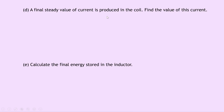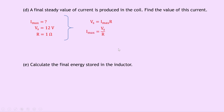Part D says that a final steady value of current is produced in the coil — find the value of this current. It's going to be the maximum current, Imax. Supply voltage Vs is 12 volts and resistance R is 1 ohm. Using Ohm's law, Vs equals Imax times R, so Imax equals Vs over R. Substituting in gives 12 divided by 1, which gives a maximum current of 12 amps.